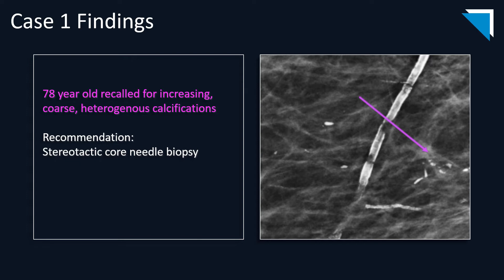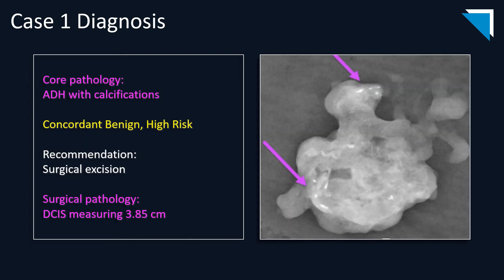In case one, we have a 78-year-old who was recalled for increasing coarse heterogeneous calcifications. These were fairly close to some very coarse benign vascular calcifications, so it was a very good pickup from this radiologist. The recommendation was for stereotactic core needle biopsy. On core pathology, it did show atypical ductal hyperplasia with calcifications. These were considered concordant benign results and also high risk because of the atypia. Recommendation was for surgical excision. The surgical pathology did show DCIS measuring up to 3.85 centimeters.